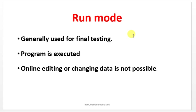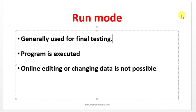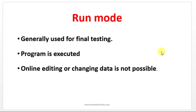Next is run mode. Once you have written the program, compiled it, and are ready to monitor, you can go to run mode for final testing. You can see the result of all your logic in run mode. If the PLC software is not in run mode, you cannot see the current status of outputs. In this mode, you cannot change or edit the program — it is only to view what is happening.